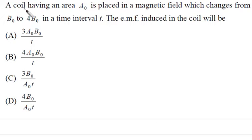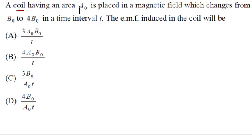Next question: A coil having area A₀ is placed in a magnetic field which changes from B₀ to 4B₀ in a time interval t. The EMF induced in the coil will be? Here a coil of area A₀ is given, and the magnetic field changes from B₀ to 4B₀.